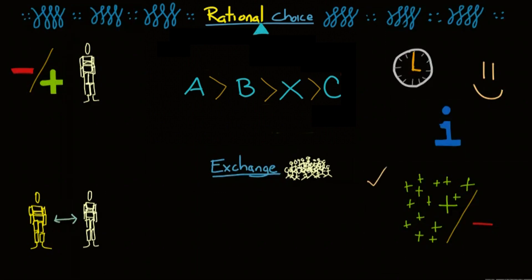Rewards can be social approval, recognition, money, gifts, or positive gestures, like a smile, while punishments consist of social disapproval, public humiliation, or negative gestures, like a frown.